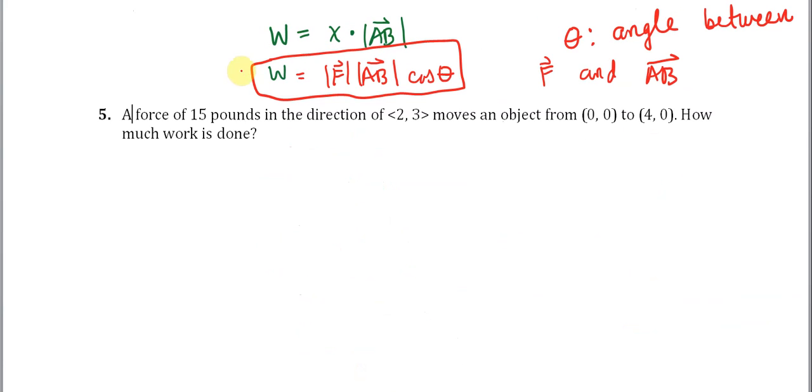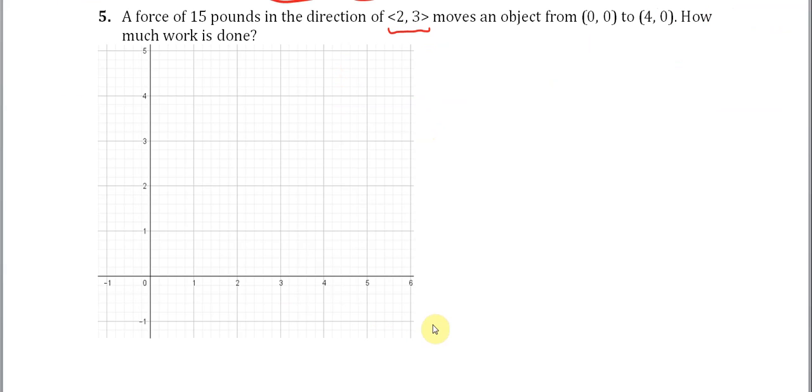A 15 pound force in the direction of this vector moves an object from (0,0) to (4,0). So I'm going to start out with my x-y coordinate plane here. The displacement is moving from (0,0) to (4,0), so this is my displacement vector. I'll call this A and B. The components of AB is <4,0> and the magnitude of AB is simply 4.